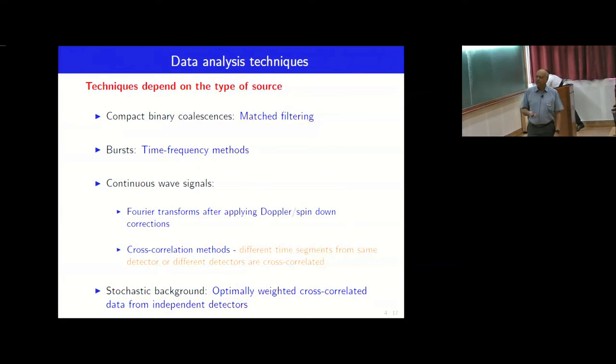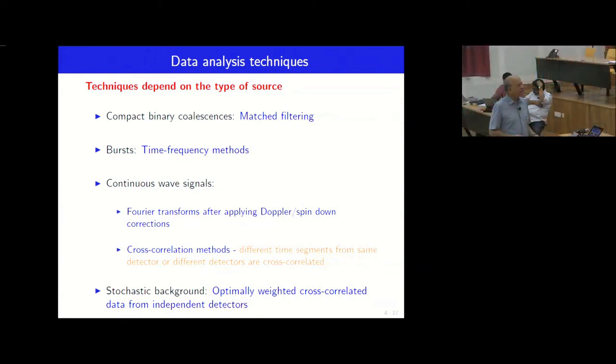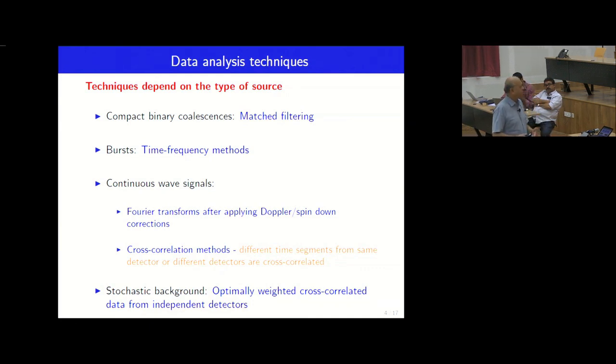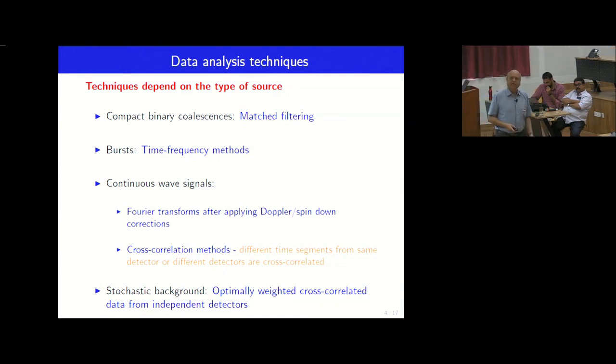And the last one is the stochastic background, where you have optimally weighted cross correlated data from independent detectors. So you cross correlate data from different detectors. And since the noise is independent but the signal is not, you would get something, some kind of a signal.